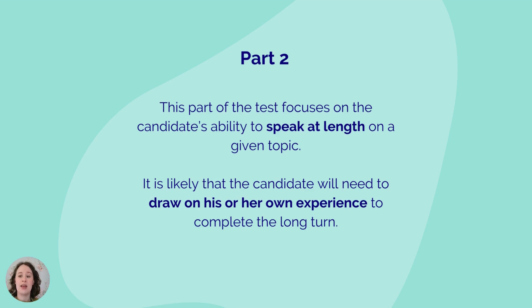The examiner asks the candidate to talk for one to two minutes and then stops the candidate after two minutes and asks one or two questions on the same topic. This part of the test focuses on the candidate's ability to speak at length on a given topic. It is likely that the candidate will need to draw on his or her own experience to complete the long turn.